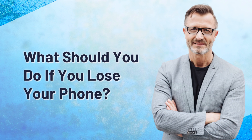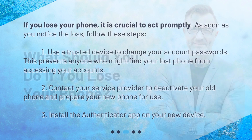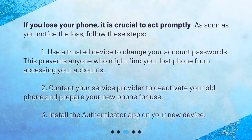What should you do if you lose your phone? If you lose your phone, it is crucial to act promptly. As soon as you notice the loss, follow these steps. First, use a trusted device to change your account passwords — this prevents anyone who might find your lost phone from accessing your accounts. Second, contact your service provider to deactivate your old phone and prepare your new phone for use. Third, install the Authenticator app on your new device.